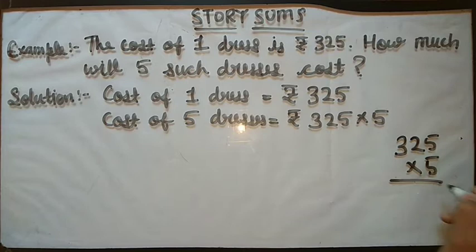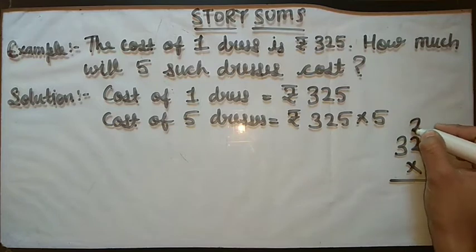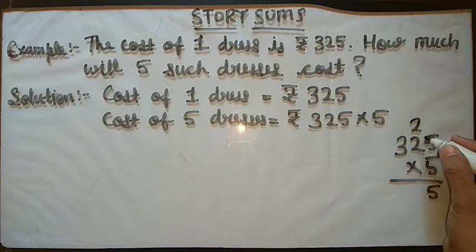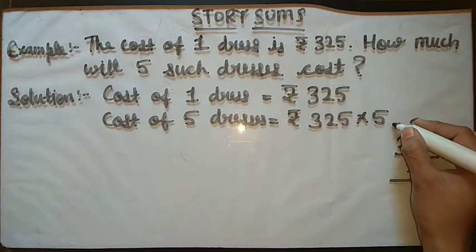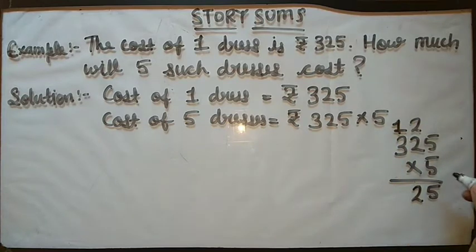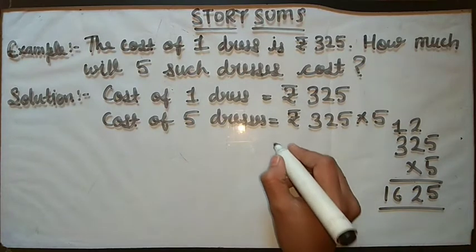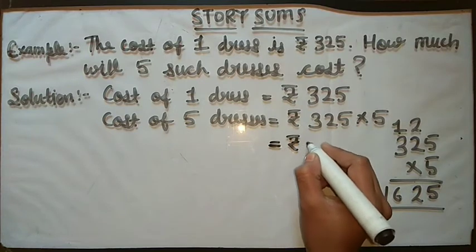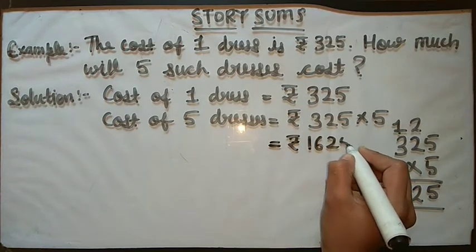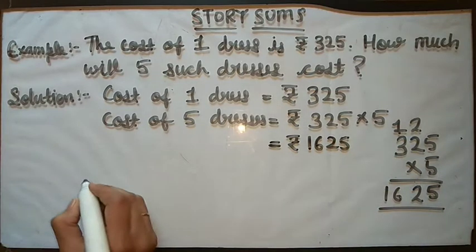5 fives are 25. 5 will be here and 2 will be carry. 5 twos are 10, 10 plus 2 is 12. 2 will be here and 1 will be carry. 5 threes are 15, 15 plus 1 is 16. So we will write 16 here.